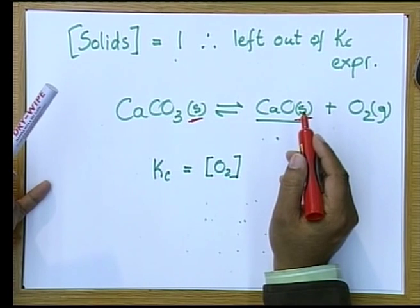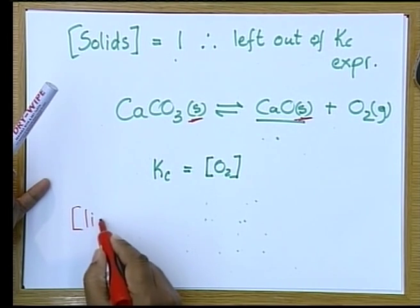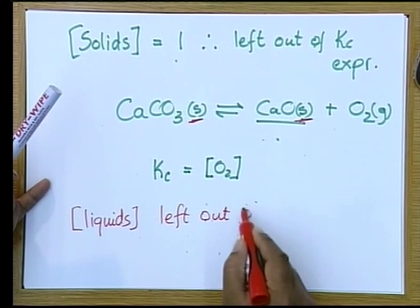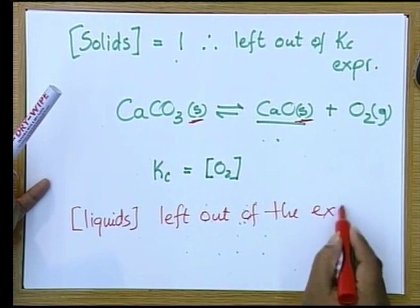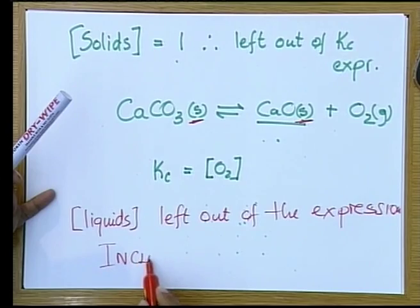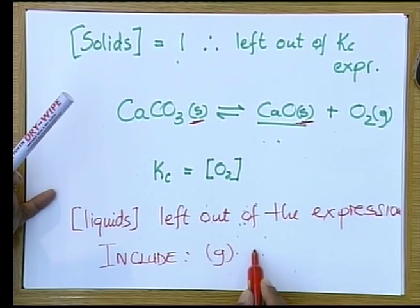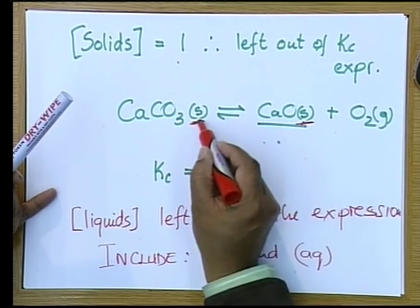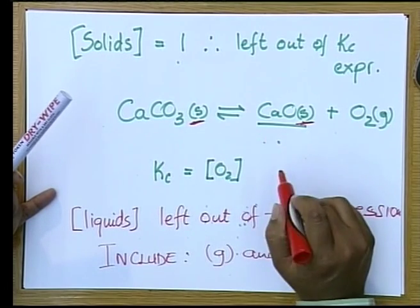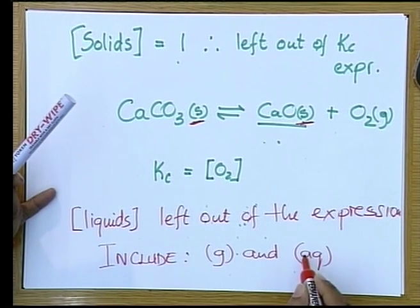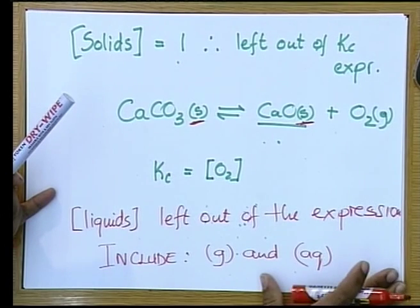Pure liquids are also left out of the expression. What we do include will be gases and the concentration of aqueous solutions. Whenever you see an L or an S behind a chemical substance in an equilibrium equation, you do not include it in your Kc expression. But when we see gas or aq for aqueous solution, then we do include it. So we can now go to our question.